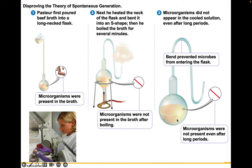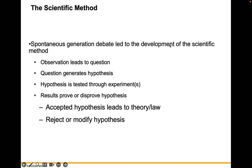The spontaneous generation debate led to the development of the scientific method. Observations lead to questioning; questions generate hypotheses; hypotheses are tested by experimentation; and results can disprove or support a hypothesis. When enough experiments build up an overwhelming, consistent database of evidence in support of a hypothesis, it can become a theory or a law. Otherwise, you may need to reject or modify your hypothesis.